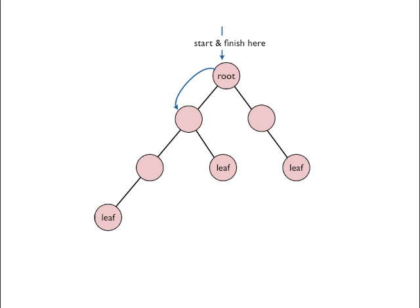From the next node we have two choices — left or right — and we take the left path. From there we only have one choice and we take the left path again, finding ourselves at a leaf node with no more paths. So we return back to the previous location in the tree. From there we find we've explored the only path, the left path, so we return again to the previous node, where we find an unexplored right path. We explore it and find ourselves at another leaf node, then return to the previous location where both left and right paths are now explored.